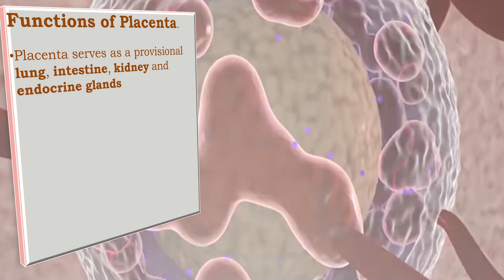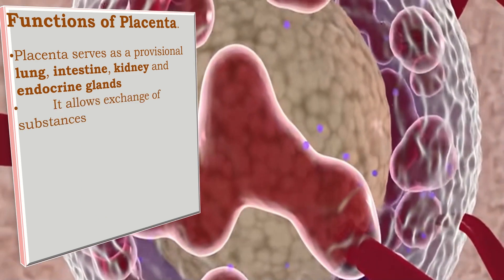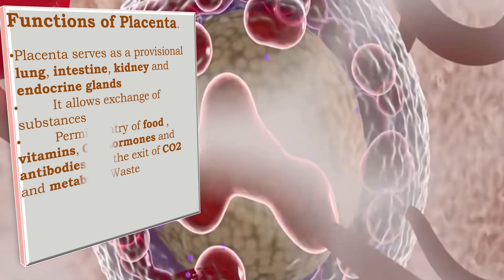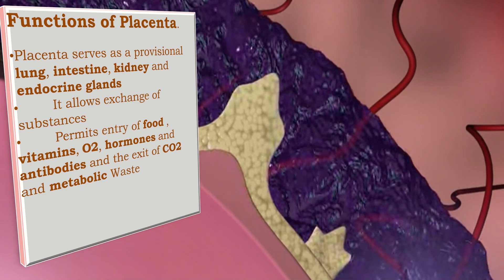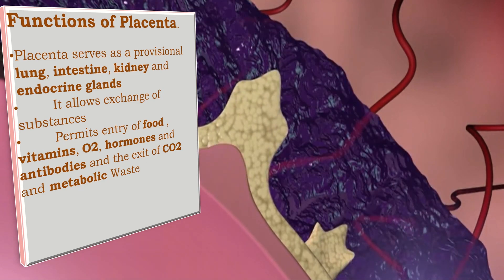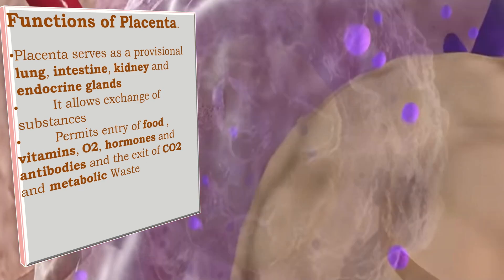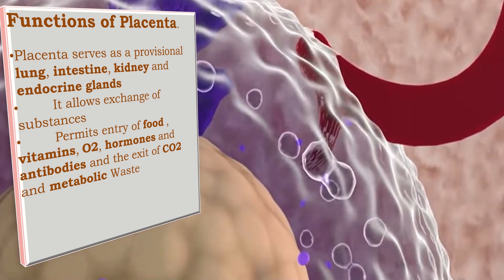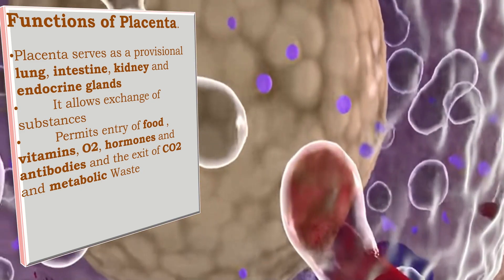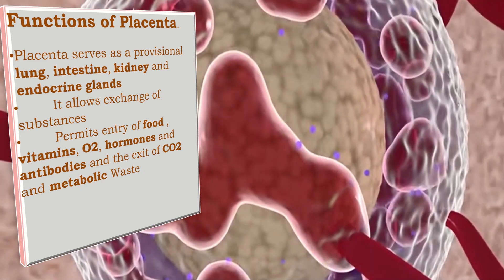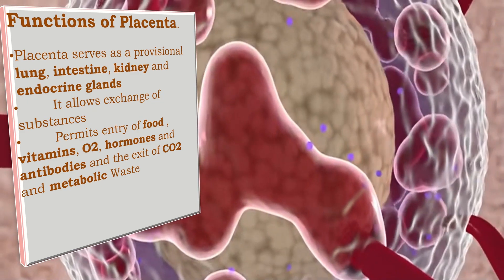It allows the maternal and fetal blood to come in proximity for the exchange of substances. Its actions are highly selective, as it permits the entry of food, vitamins, oxygen, hormones, and metabolites, and the exit of carbon dioxide and nitrogenous metabolic wastes.